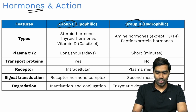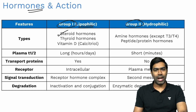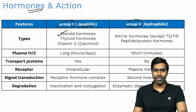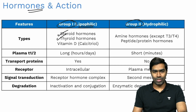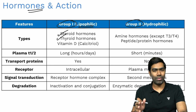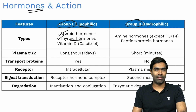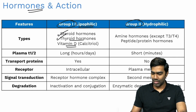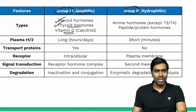Group 1 — lipophilic, meaning lipid-soluble — includes steroid hormones such as adrenal steroids and gonadal steroids. Examples include cortisol, aldosterone, testosterone, and estrogen. The second subgroup is thyroid hormones. Remember, most amino acid-based hormones are hydrophilic; the only exception is thyroid hormones. Vitamin D, if considered a hormone, is also classified as lipophilic.